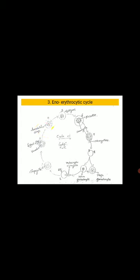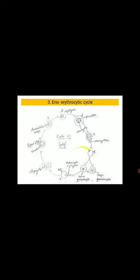When feeding stops, the pseudopodia disappear and the parasite becomes rounded — this stage is known as the schizont. The schizont contains a single nucleus and hemozoin pigment in the cytoplasm. The schizont then undergoes schizogony, during which the nucleus divides into 24 daughter nuclei, forming merozoites. The merozoites are released into the blood by rupturing the RBCs, and these merozoites again attack healthy red blood cells. After several generations, they are converted into gametocytes.